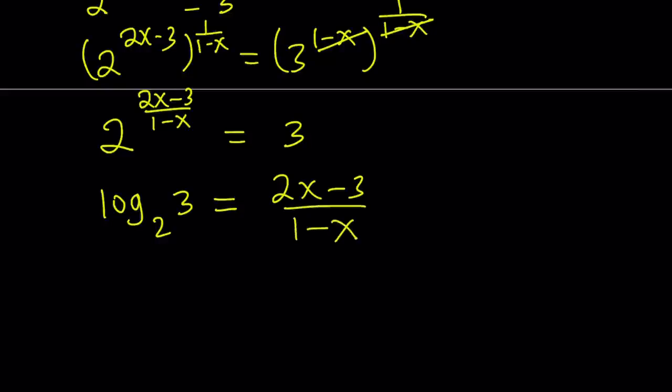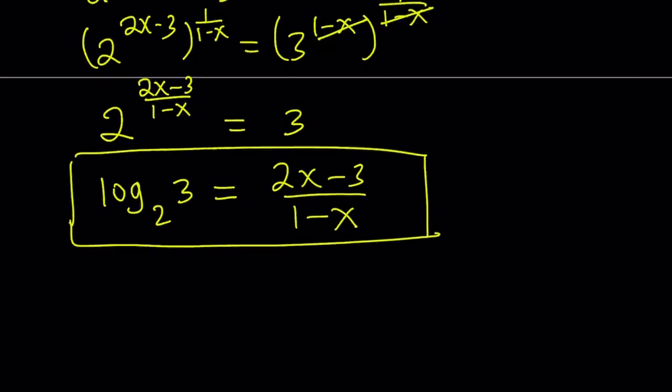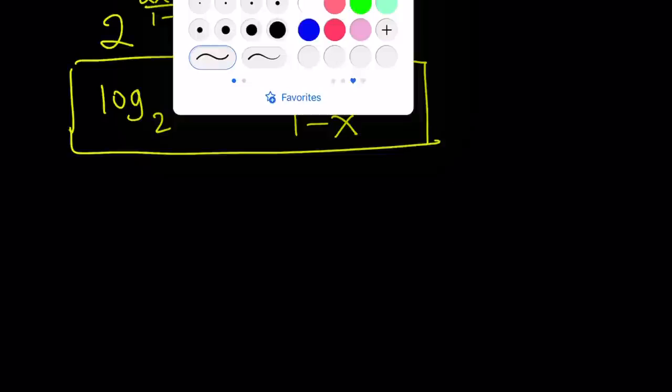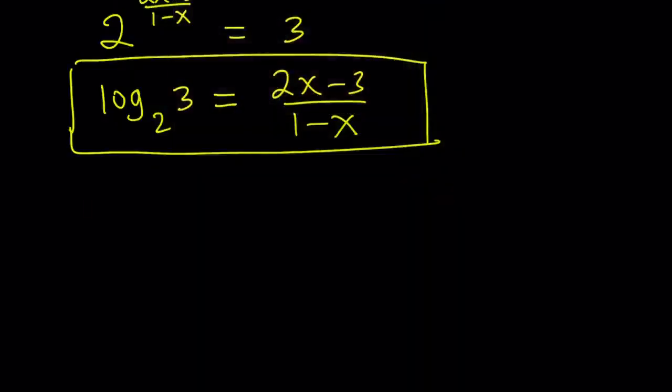We can safely say that log 3 with base 2 becomes 2x minus 3 divided by 1 minus x. Our goal was to find this in terms of x, and we did. So let's go ahead and talk about the second method.